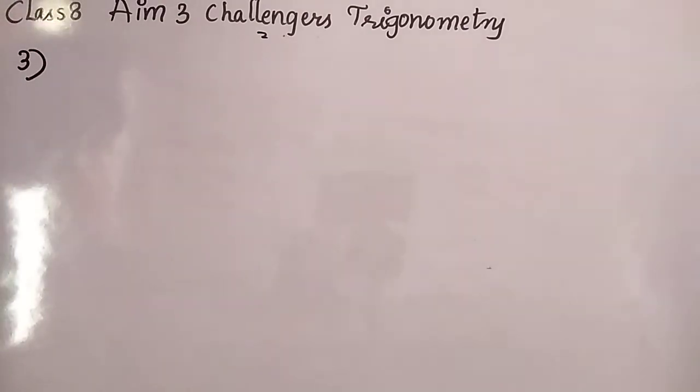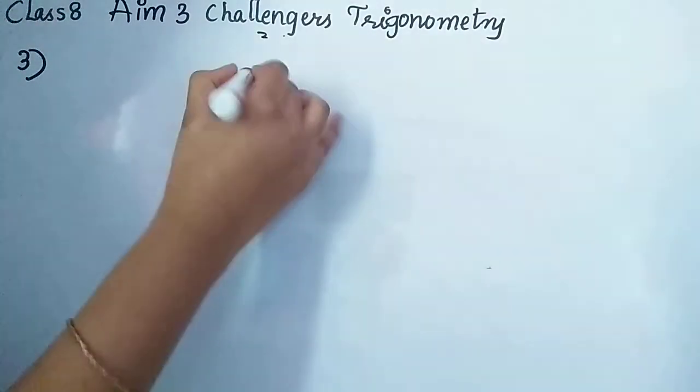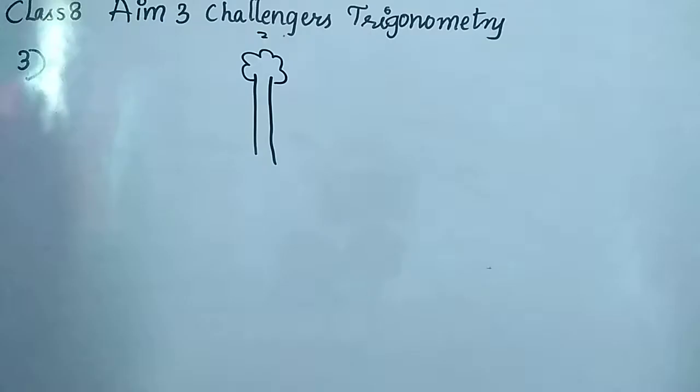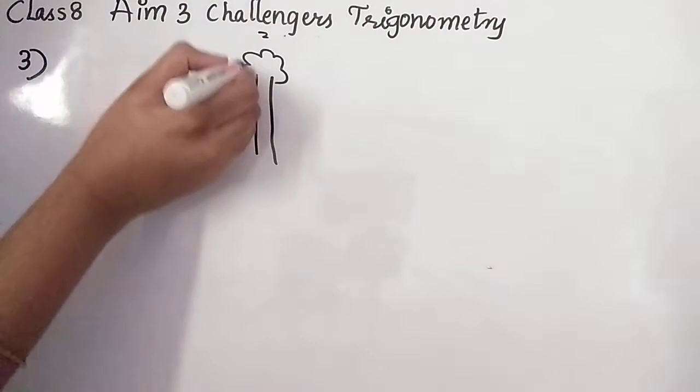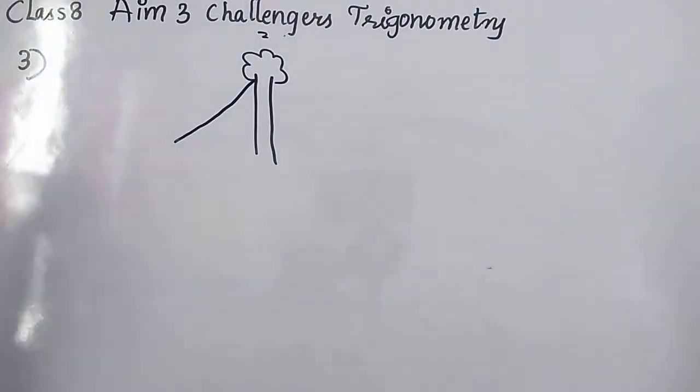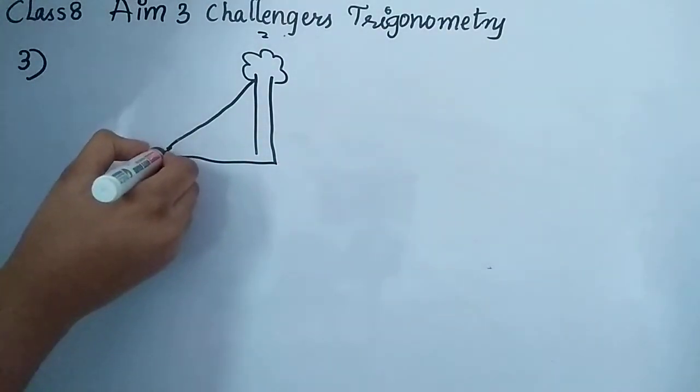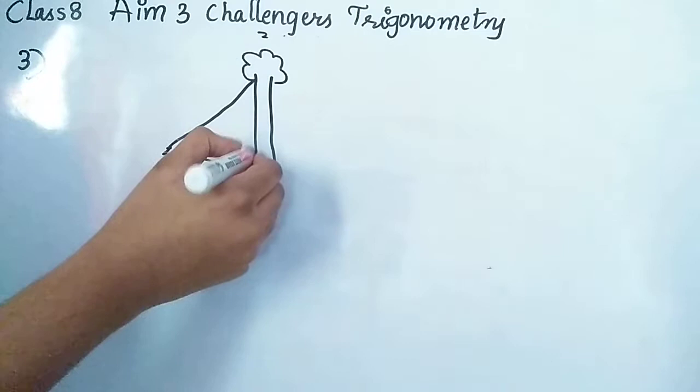So first let's consider one tree here. Straight tree we will consider. Okay, tree, fine. Now then what happened? It is a depression. That means from here to here it will come. Ground, without ground no possibility. Right, so ground also I drew.